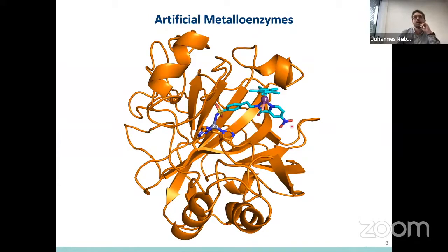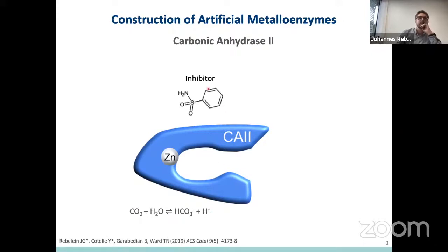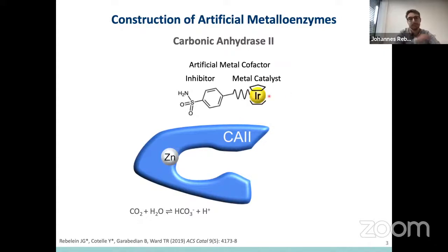The question is how can we target such a synthetic metal catalyst to a protein or an enzyme, and I'm going to explain this on the example of carbonic anhydrase. Carbonic anhydrase has in the active site a zinc, which in nature catalyzes the conversion of CO2 to bicarbonate and protons. Several inhibitors have been described, and a lot of them are based on this aryl sulfonamide, which very tightly binds to the zinc in the active site. If you now use this inhibitor and link it to your metal catalyst, you have just created an artificial metal cofactor, because after addition of this metal cofactor to your protein, it will bind and construct an artificial metalloenzyme.